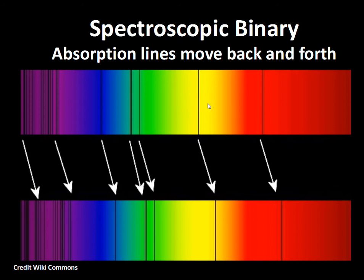We have these absorption lines that shift back and forth. By using the Doppler formula, astronomers can calculate the speed of each star and work out their masses. There are lots of binary star systems in the sky that don't show any shift of their spectral lines — because the Doppler shift does not give us any indication of sideways motion. If we happen to be looking face-on to the orbits of the star system, the stars go up and down, left and right, but not come towards us or away from us.